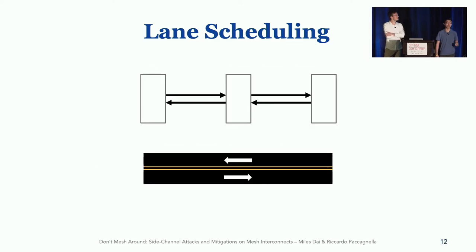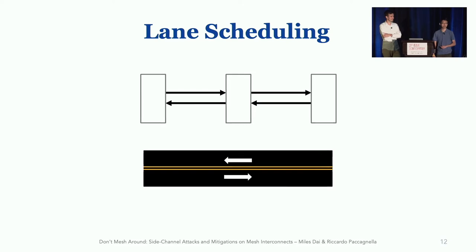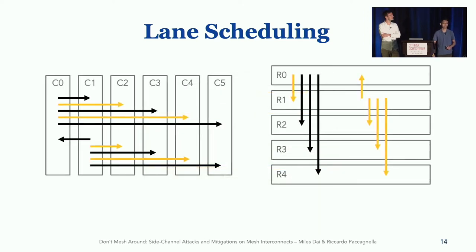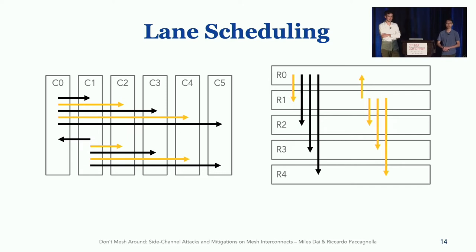Whereas we've previously been envisioning the mesh as a simple road, it might be more appropriate to see it as having two lanes going in either direction. Naturally, this raises the question: how does traffic pick which lane to use? Once again, we can test a variety of different placements and observe some patterns. Most surprisingly, the rules are different when traveling vertically versus horizontally on the mesh. Traveling horizontally, lane selection is dependent on the destination of the traffic flow, whereas when traveling vertically, it's dependent on the source.